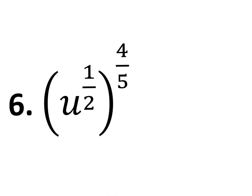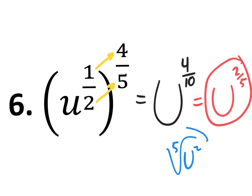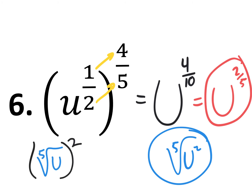Number six: when we have a power to a power, we multiply fractions — top times top, bottom times bottom. We get u to the four-tenths, which reduces to u to the two-fifths. That's the answer in exponential form. In radical form it's the fifth root of u to the second power. You could also put the power of two on the outside of the fifth root of u — it's the same thing.